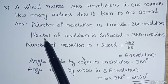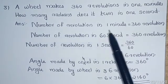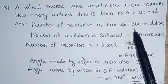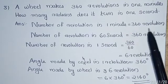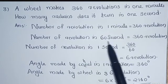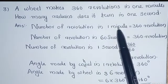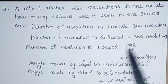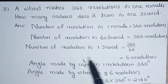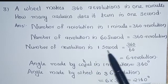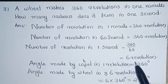For that, first we write the number of revolutions in 1 minute, which is given as 360 revolutions. A wheel is round in shape. The number of revolutions in 60 seconds — since 1 minute equals 60 seconds — is 360 revolutions. So the number of revolutions in 1 second is equal to 360 divided by 60, which equals 6 revolutions.